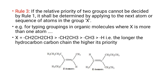Rule 3: If the relative priority of two groups cannot be decided by Rule 1 alone, it shall be determined by applying the next atom or sequence of atoms in the group. For hydrocarbon chains, the longer the chain, the higher its priority. Priority order: –CH2CH2CH3 > –CH2CH3 > –CH3 > –H.